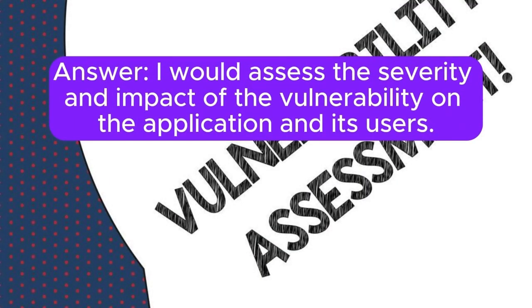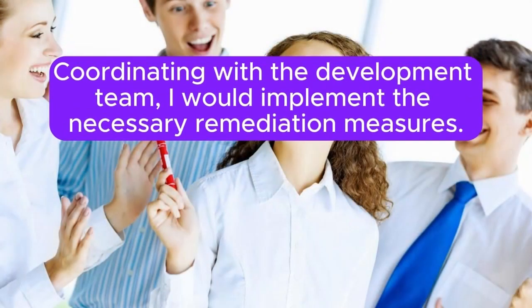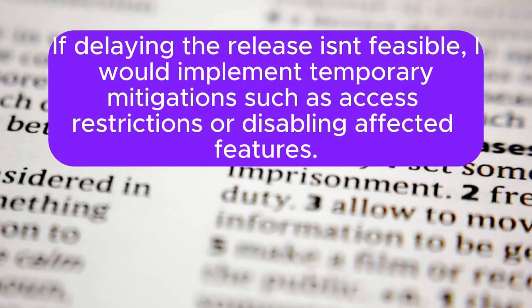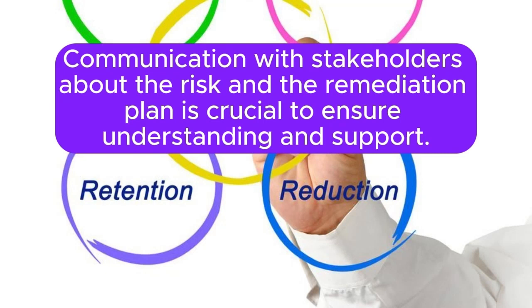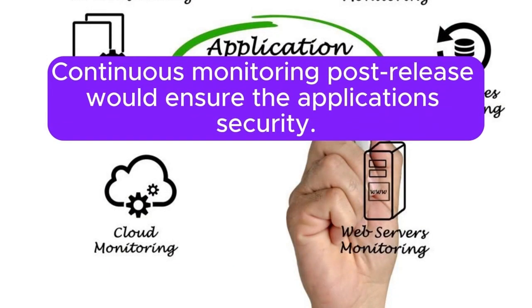Scenario 52: A new vulnerability is discovered in an application just before its scheduled release. How do you handle this? I would assess the severity and impact of the vulnerability on the application and its users. If the risk is high, I would consider delaying the release to address the vulnerability through patches or code fixes. Coordinating with the development team, I would implement the necessary remediation measures. If delaying the release isn't feasible, I would implement temporary mitigations such as access restrictions or disabling affected features. Communication with stakeholders about the risk and the remediation plan is crucial. Continuous monitoring post-release would ensure the application's security.